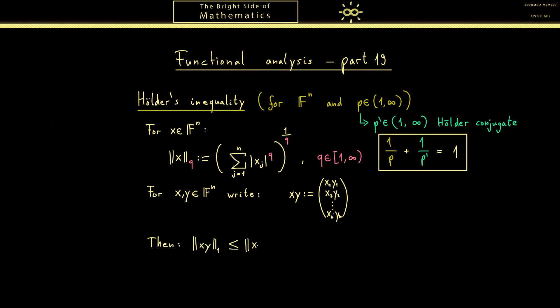Then for all vectors x and y, we have that the 1 norm of the vector xy is less or equal than the P norm of x times the P' norm of y. And that's what we call Hölder's inequality.